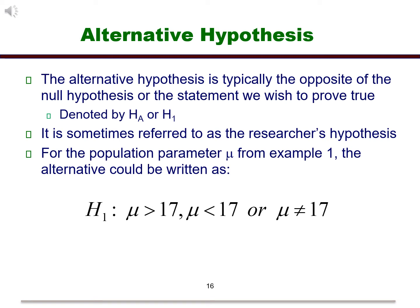It can take on values that are greater than, less than, or not equal to. The first two are considered one-tailed tests, since we only care about one direction. The inequality is considered a two-tailed test, since we care about both directions.